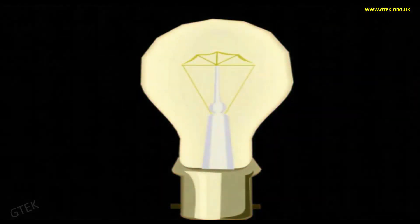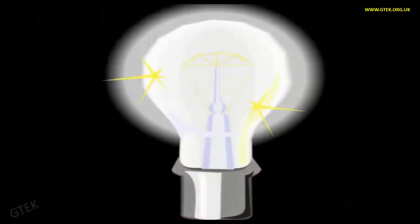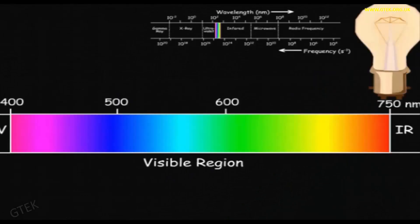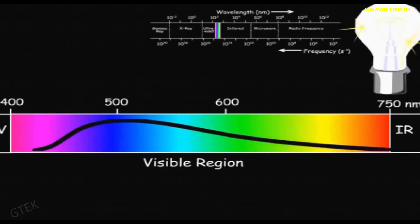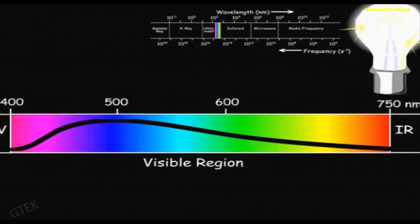You can see the wavelength. This is the region for the visible light, ranging from 400 to 750 nanometers.